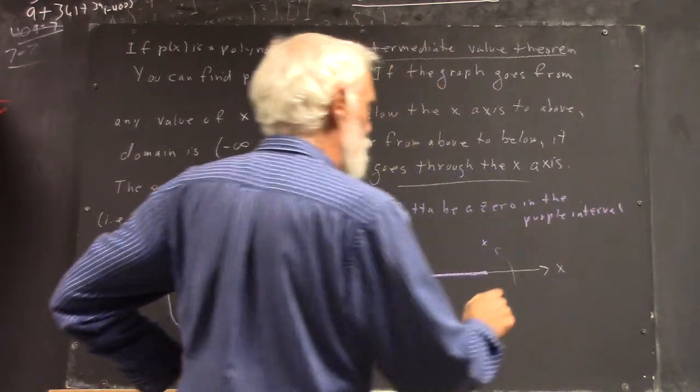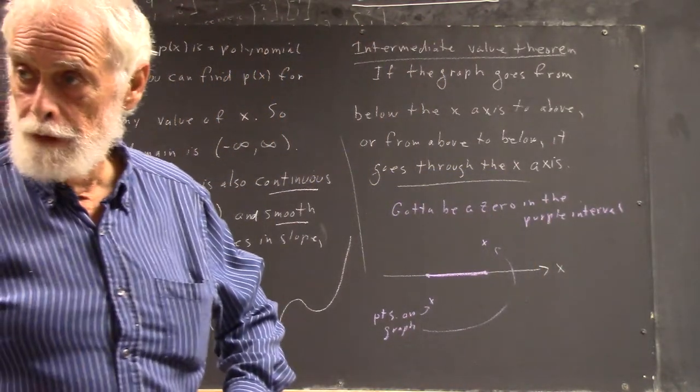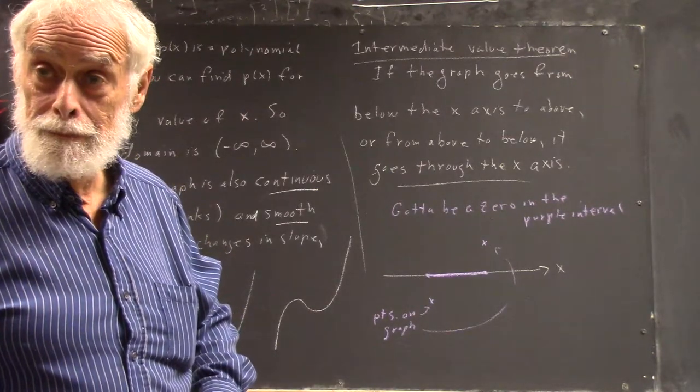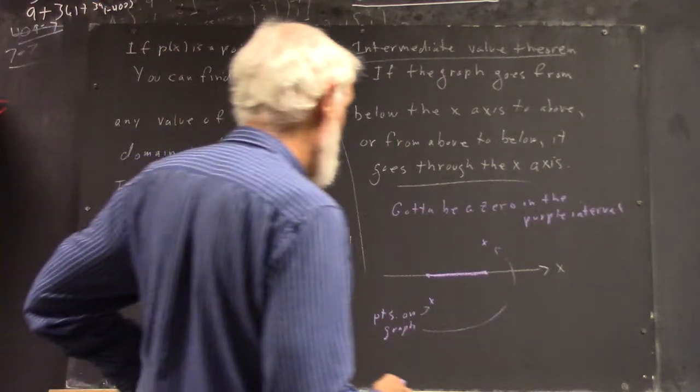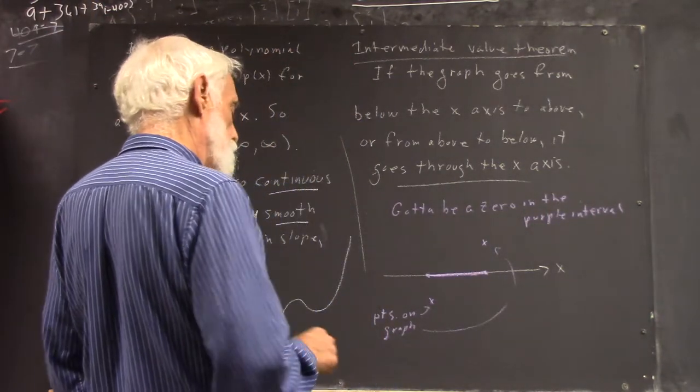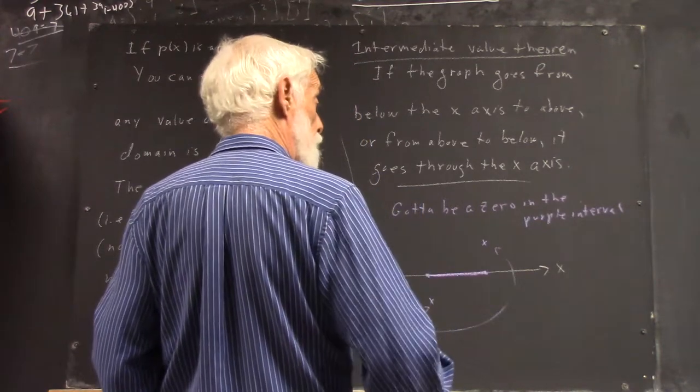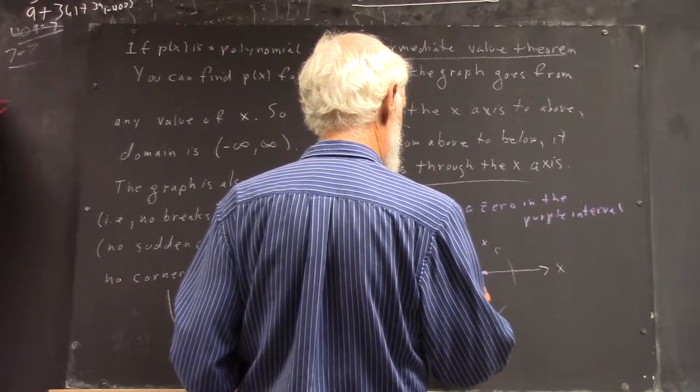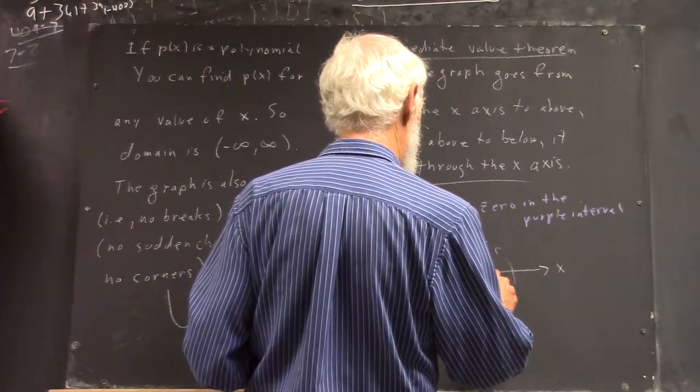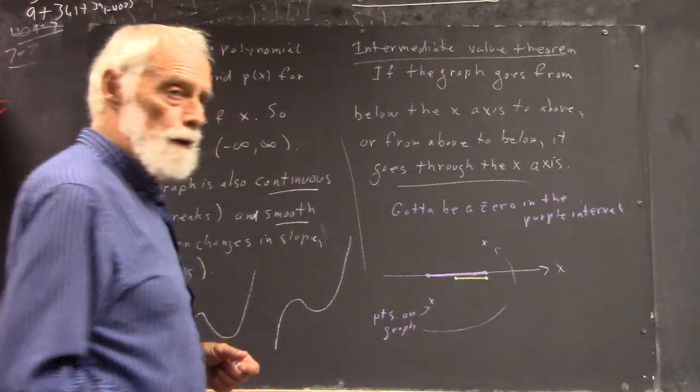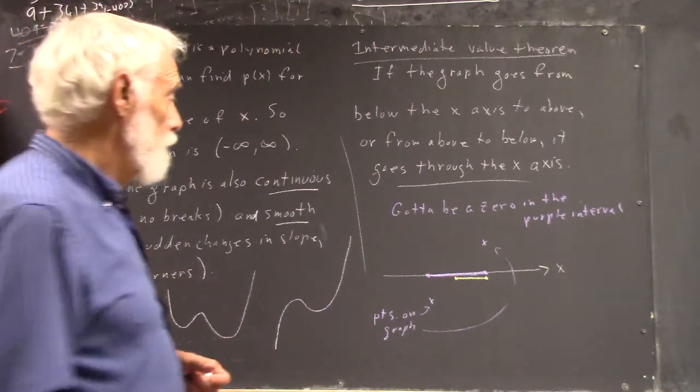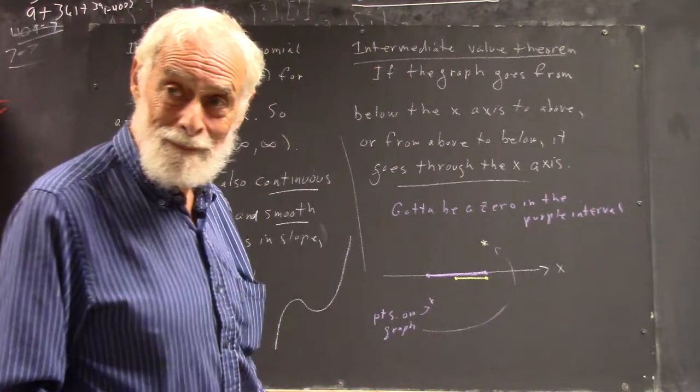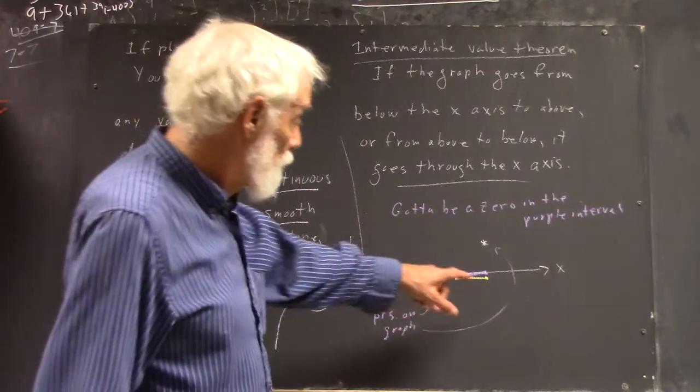There's got to be a zero in the purple interval. So now we cut the purple interval in half and get the yellow. Well, I put a yellow point right over the purple point, then this yellow interval gives us this value.